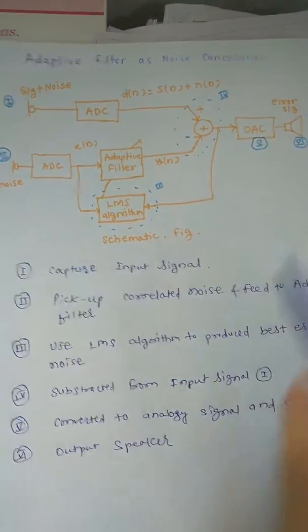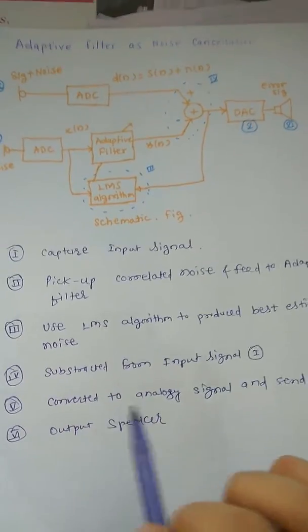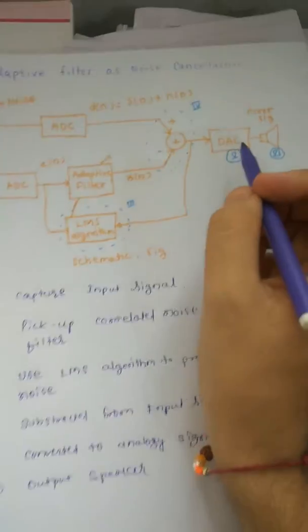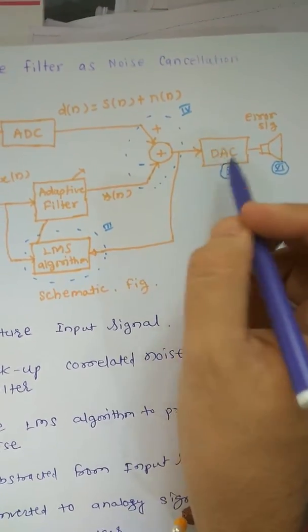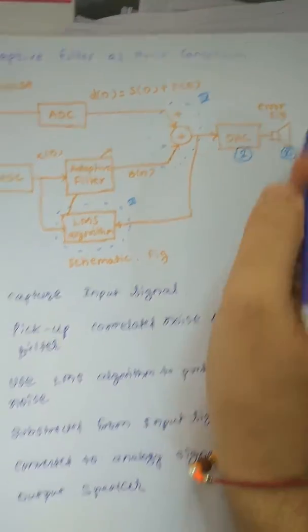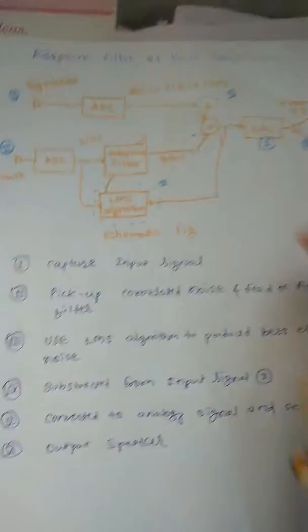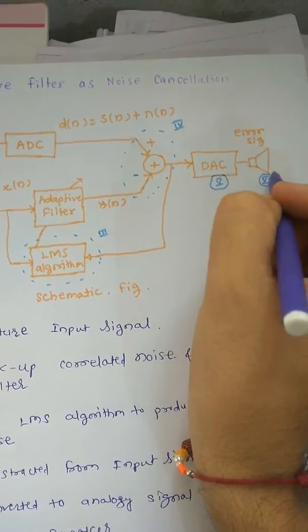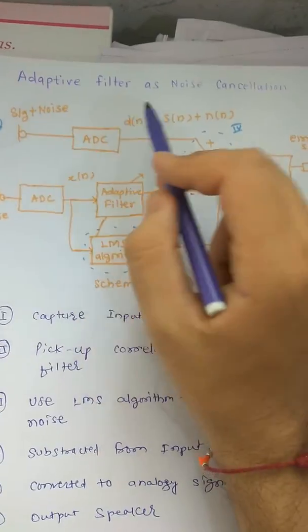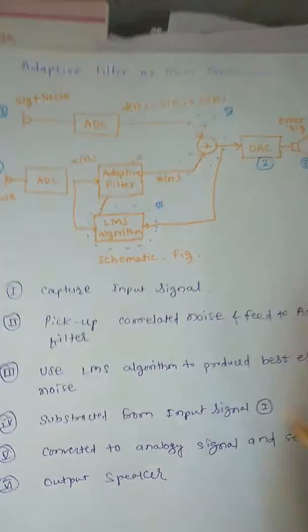Then subtracted from signal one. Fourth, convert to the analog to digital signal. This is the ADC function happening here. And then finally, error signal is to the output signal. We are given error-free signal. This is the adaptive filter as a noise cancellation in short. Thank you.